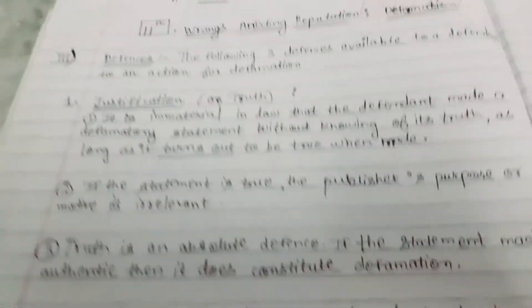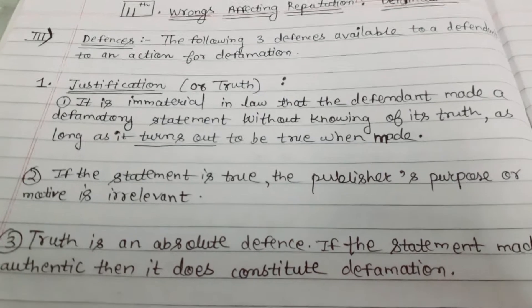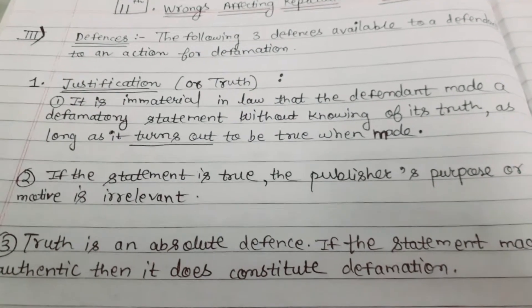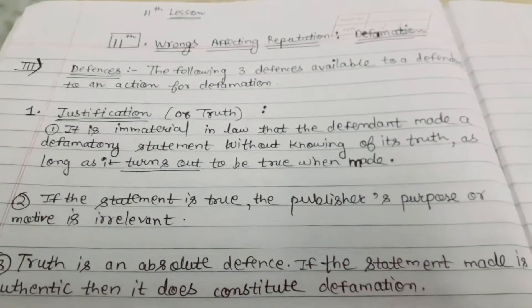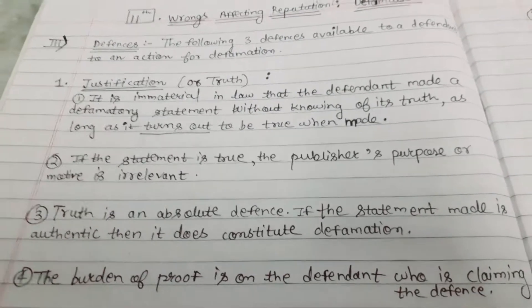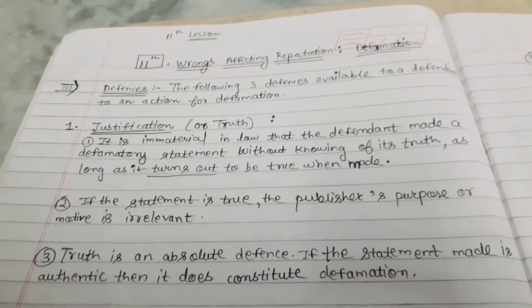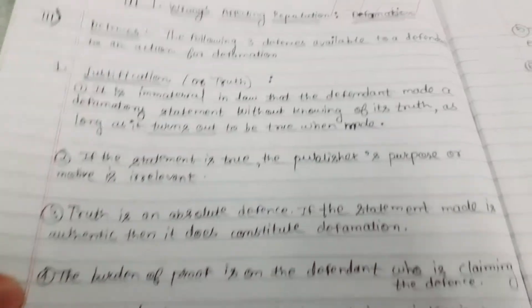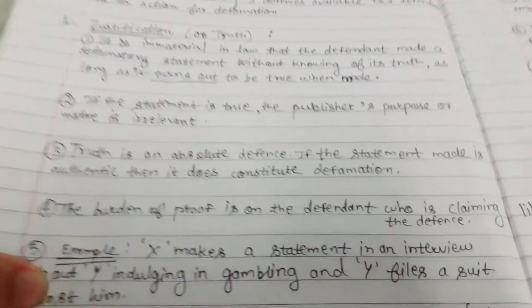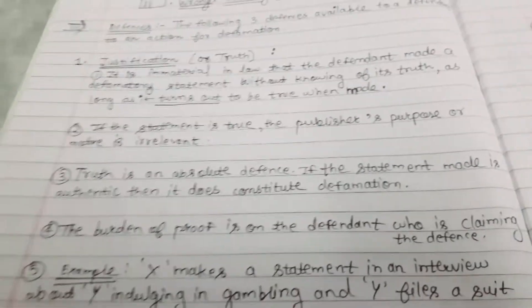The first is justification, meaning truth. It is immaterial in law that the defendant made a defamatory statement without knowing of its truth, as long as it turns out to be true when made. This defense of justification says that if the statement is true, the publisher's purpose or motive is irrelevant. Truth is an absolute defense — if the statement made is authentic, then it does not constitute defamation.